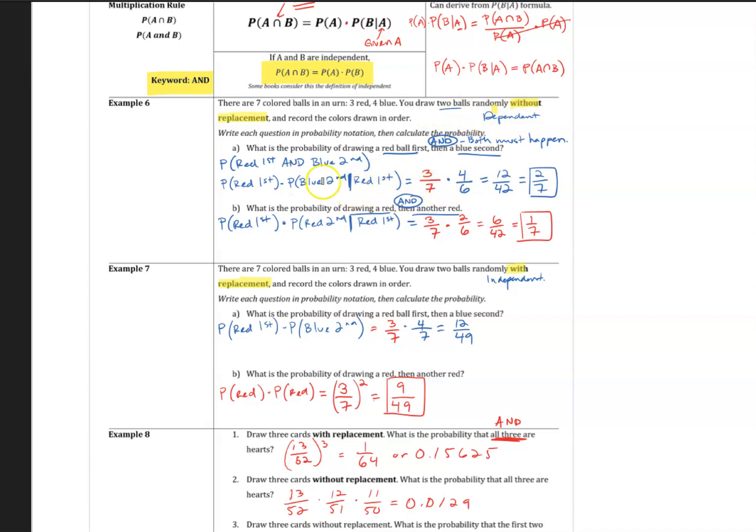There is a condition in terms of after you choose the first ball, you only have six balls left, and four of them are blue, so four out of six. What is the probability of drawing a red and another red? Three out of seven times two out of six. It goes from seven to six because you've drawn the first ball, and the second drawing depends upon what happened on the first drawing.